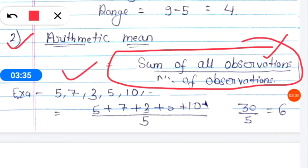So we will take the sum of all those observations. See, here on screen it is written: 5, 7, 3, 5, 10. This is an example. Through this example, we have to find the mean. So we will add all this data. So 5 plus 7 plus 3 plus 5 plus 10.